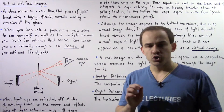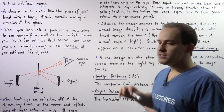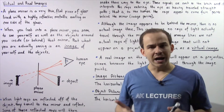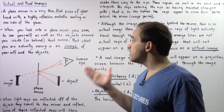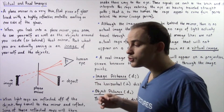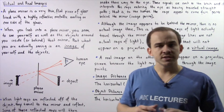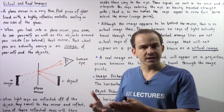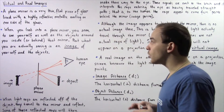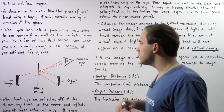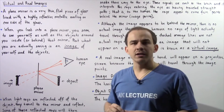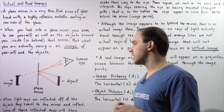When you look into a plane mirror, you seem to see yourself as well as the objects around you inside or behind that plane mirror. However, if another person goes behind that mirror, they will see that no objects are actually found behind it. What the person is actually seeing inside the mirror is an image of themselves as well as the objects around them.